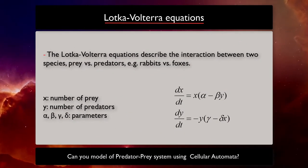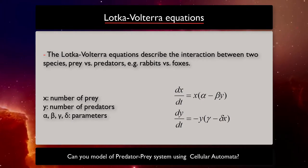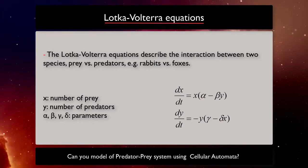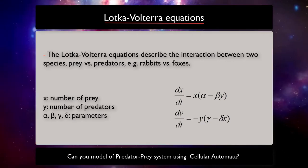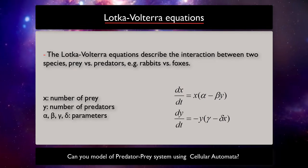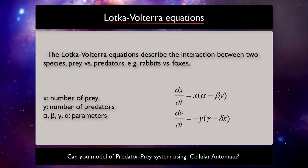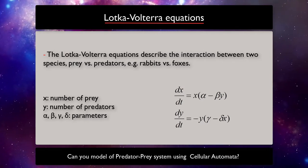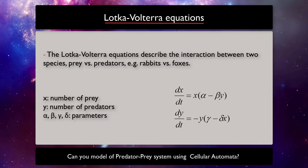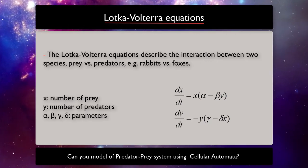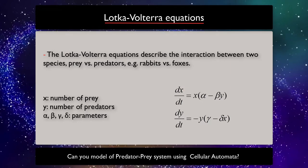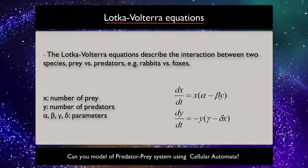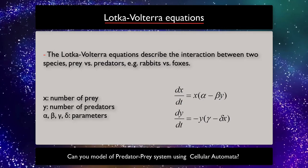The predator-prey model was initially proposed by Lotka in the theory of autocatalytic chemical reaction in 1910, and Volterra developed his model independently from Lotka and used it to explain his son-in-law's observation regarding increasing the fauna population during World War I in Adriatic Sea. Lotka-Volterra models are a pair of first-order nonlinear differential equations, frequently used to describe the dynamics of biological systems in which two species interact, one as predator and the other as prey.